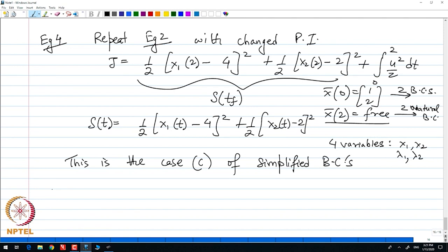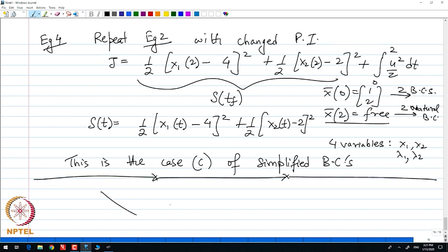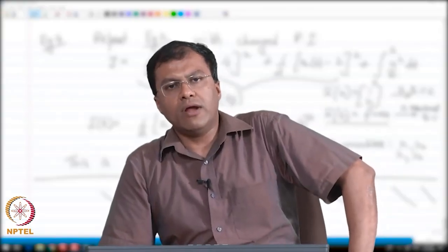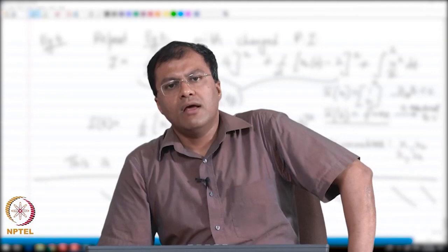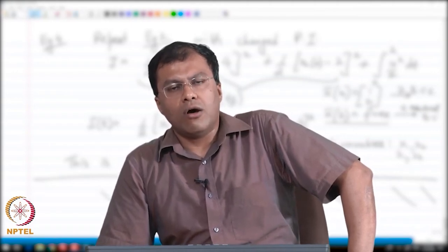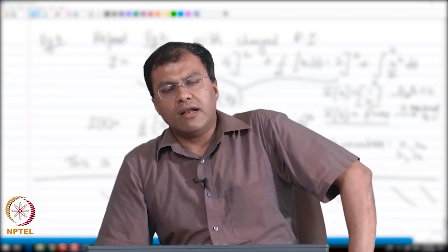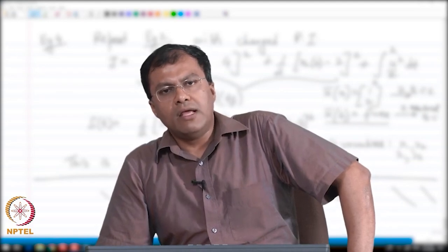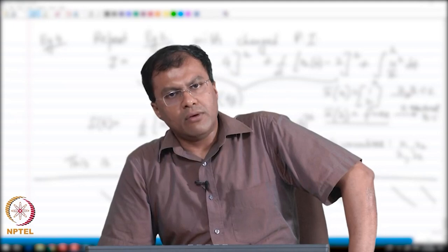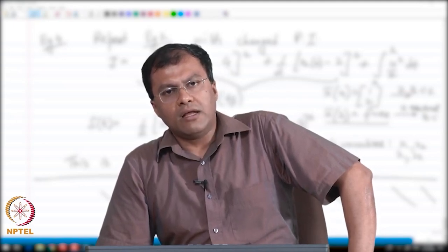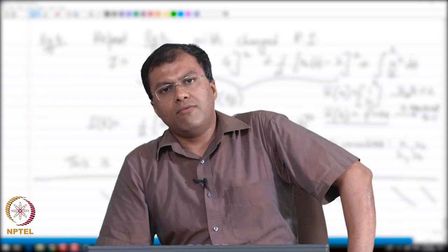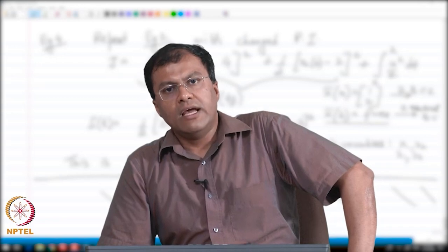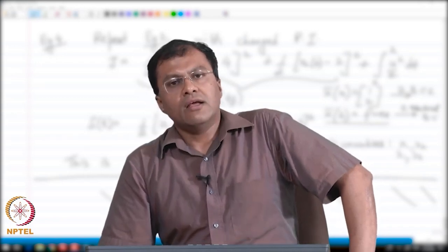I hope all the students have been able to get a feeling of how to solve problems involving optimal controls. In the next lecture, I am going to introduce another method to solve optimal control problems, namely via the Hamilton-Jacobi-Bellman equation. We will state the optimality criteria, followed by methods of constrained optimization: the method of penalty functions and slack variables. Thank you for listening.